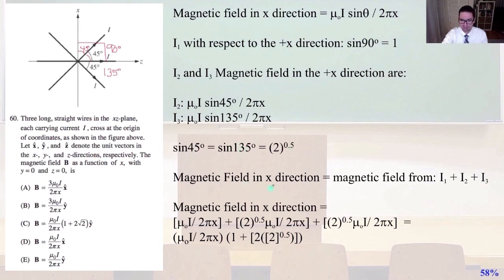So, the magnetic field in the X direction equals the magnetic field of the X components of I1 plus I2 plus I3. So, the magnetic field in the X direction is going to equal mu0 I divided by 2 pi X. And so, that was from the first wire, plus square root of 2 mu0 I divided by 2 pi X plus the square root of 2 mu0 I divided by 2 pi X. And that's from I2 and I3, which were equivalent. And so, if we factor out our mu0 I divided by 2 pi X, we can see that the magnetic field in the X direction is mu0 I divided by 2 pi X times 1 plus 2 times the square root of 2 because you had I2 and I3 being equivalent. And that is going to equal answer C.